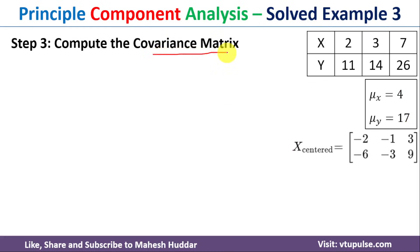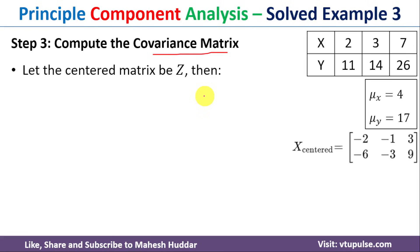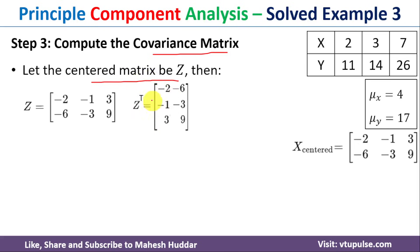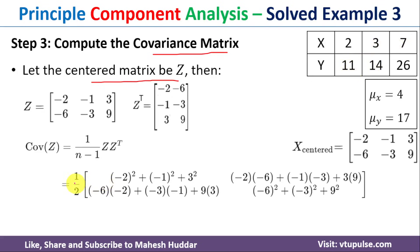After that we need to compute the covariance matrix. We denote the centered matrix as Z, then calculate Z-transpose, where the columns are represented in row form. The covariance matrix is given by: Cov(Z) = (1 / n−1) × Z × Z-transpose. Here n is the number of examples, which is 3, so n−1 = 2, giving us a factor of 1/2.